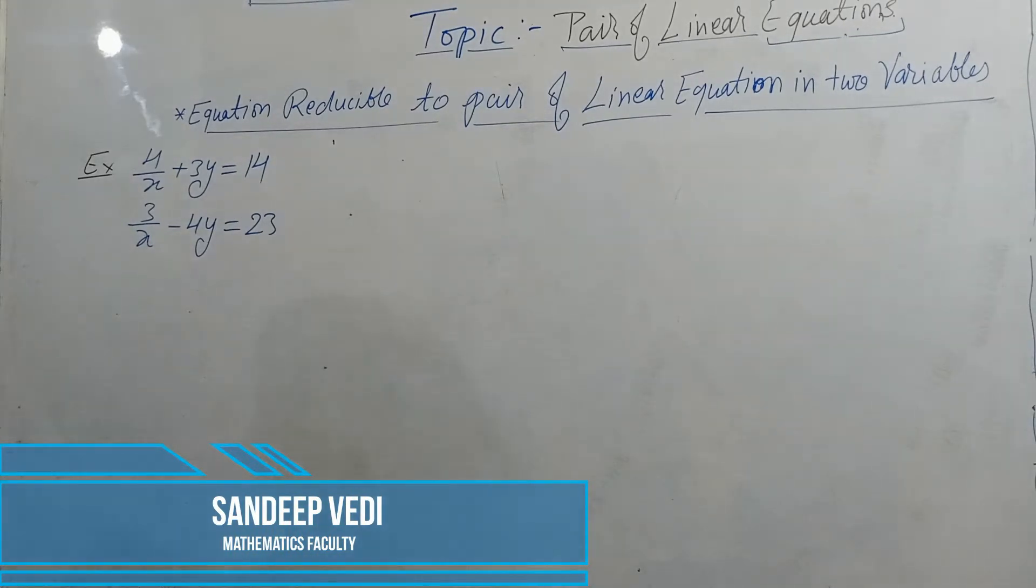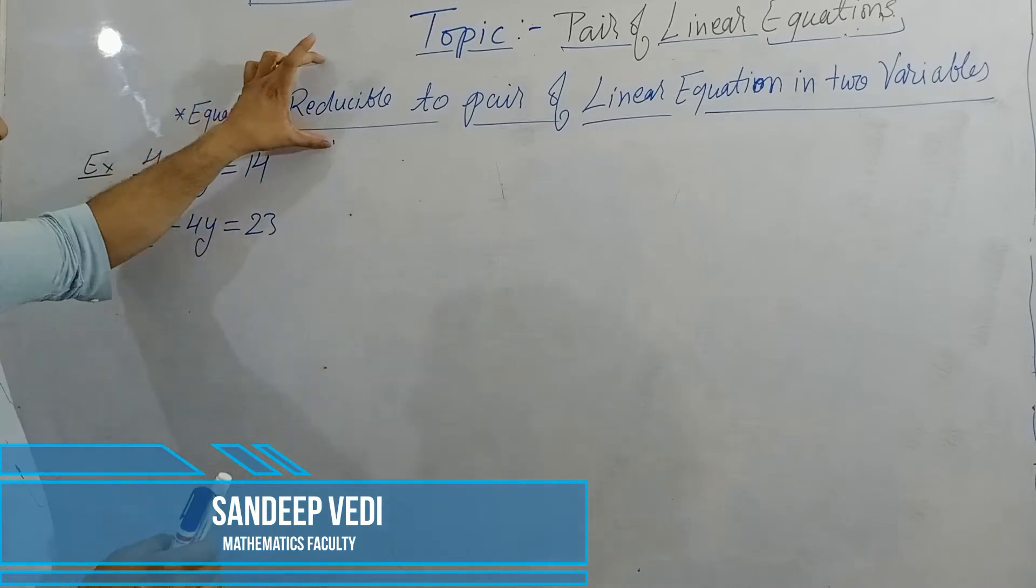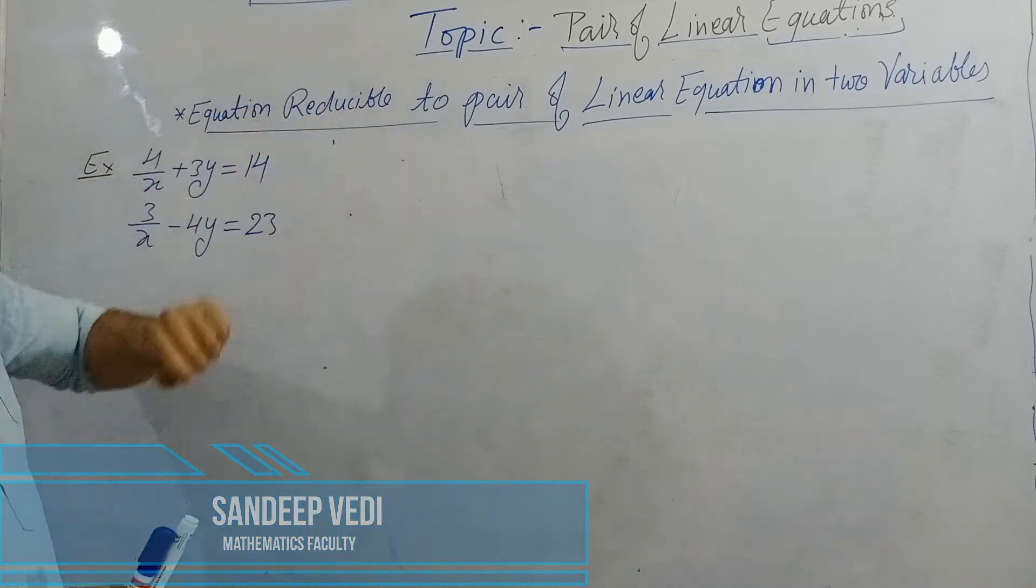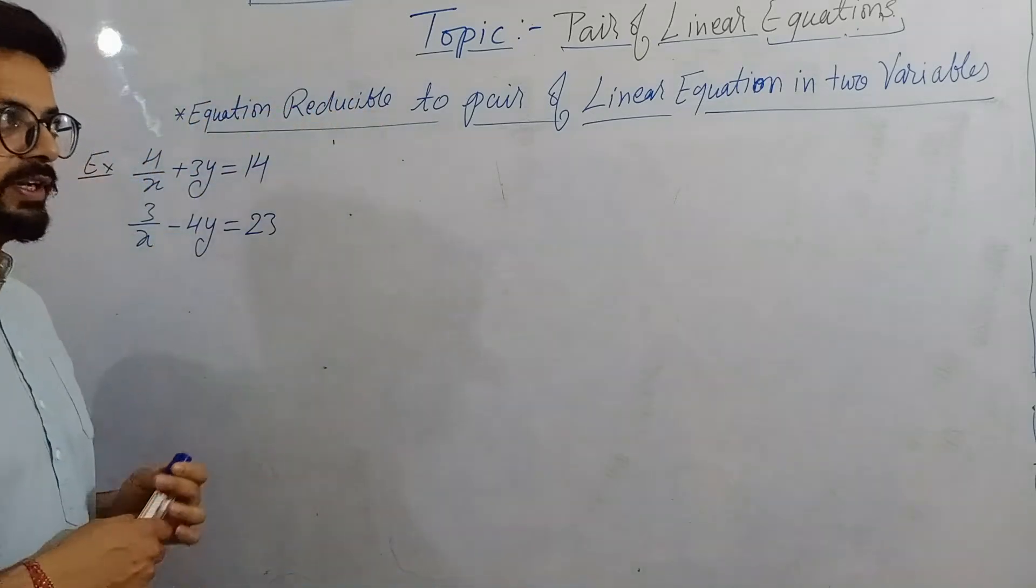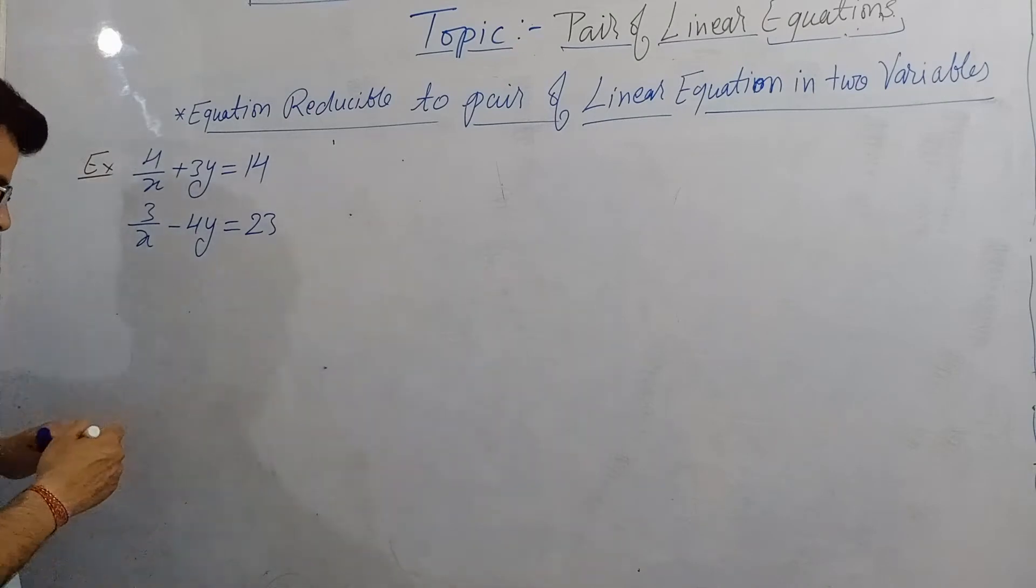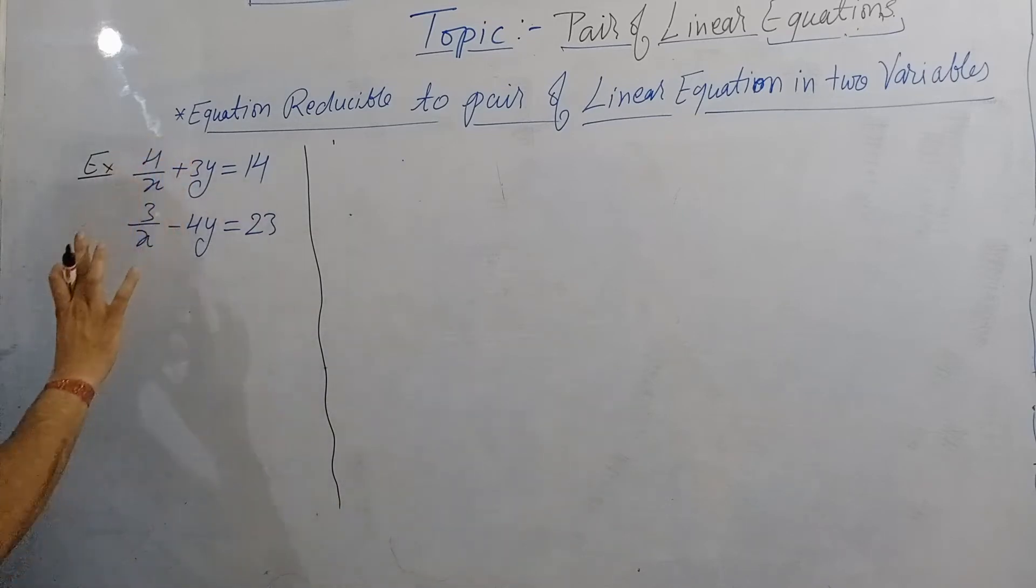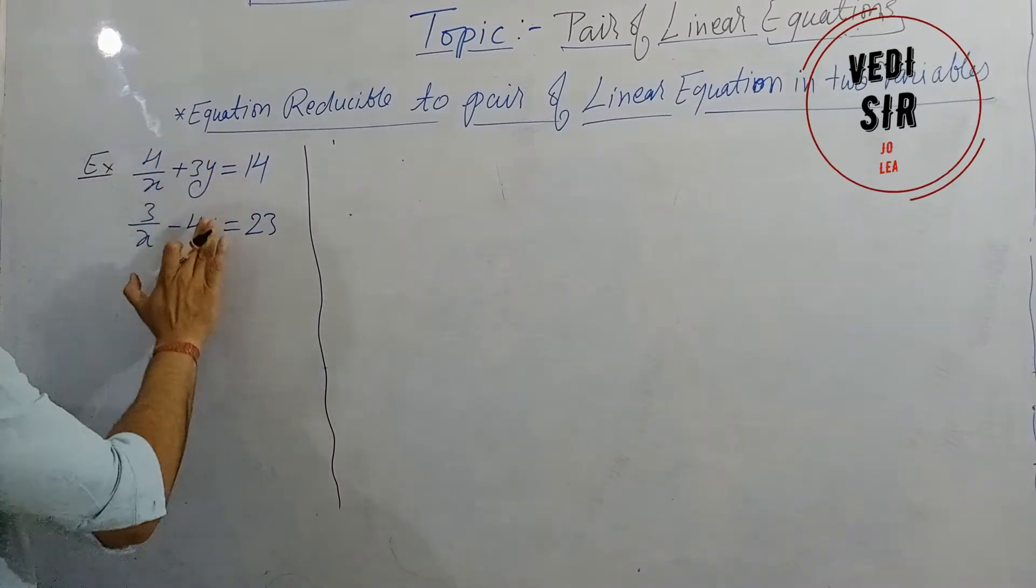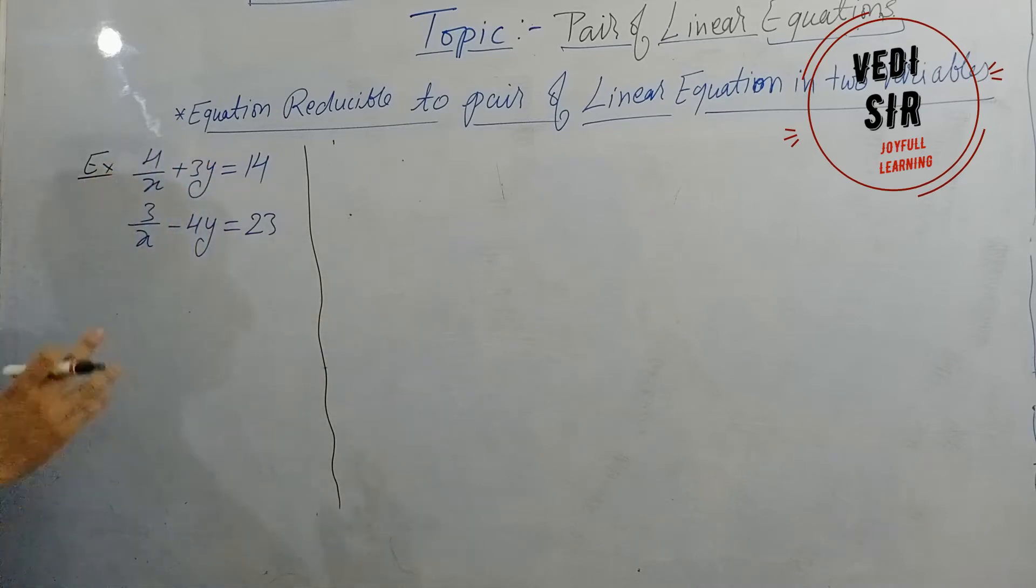Yes, this is another type of question but we will use this part equation reducible to pair of linear equation in two variables. But you know already I told you it depends on the question. Okay, how here you see this all this Y part is already in reduced form as we have seen in previous three methods.